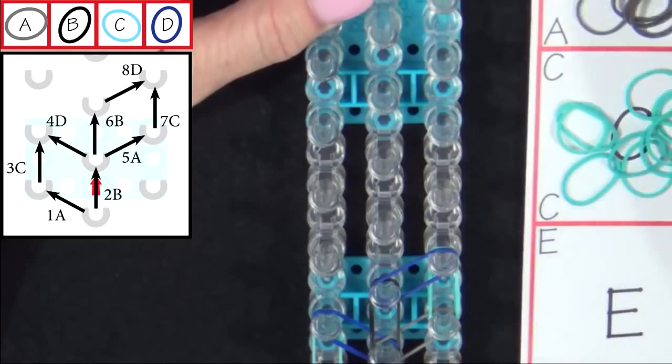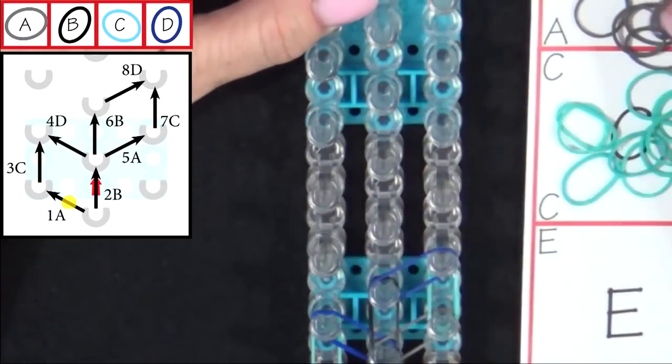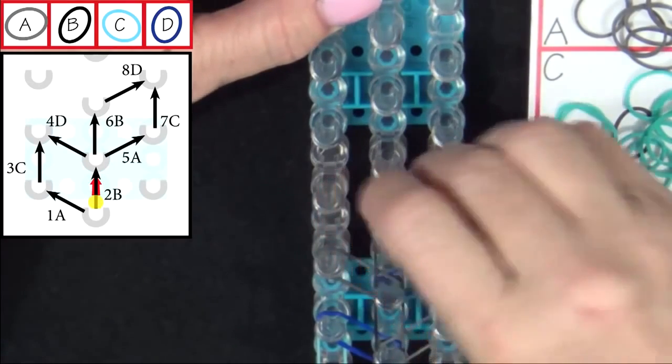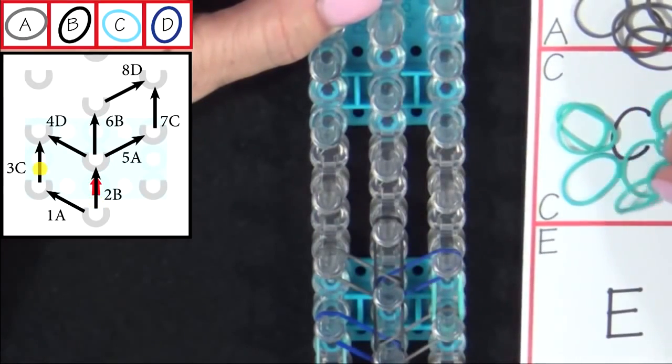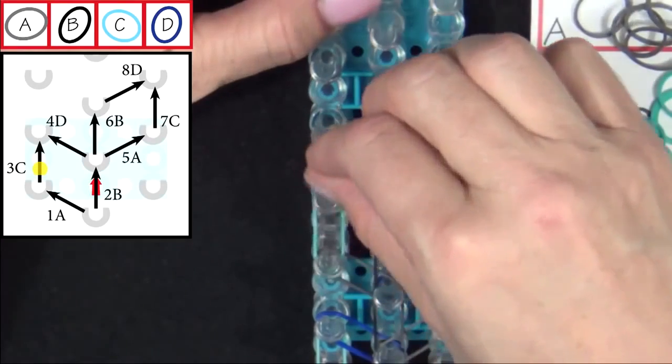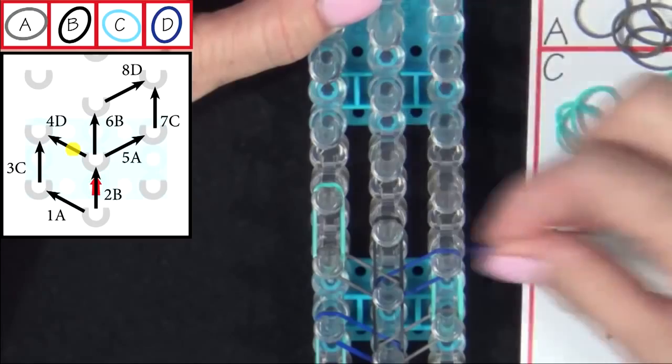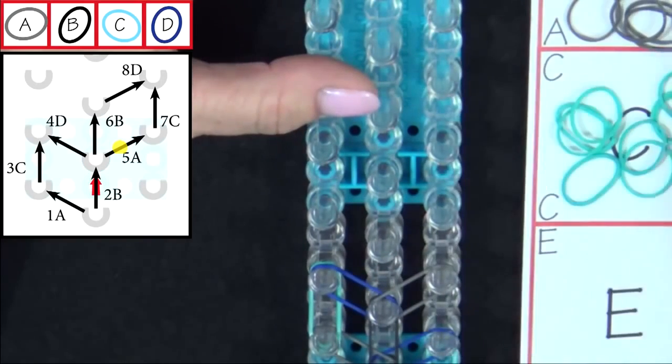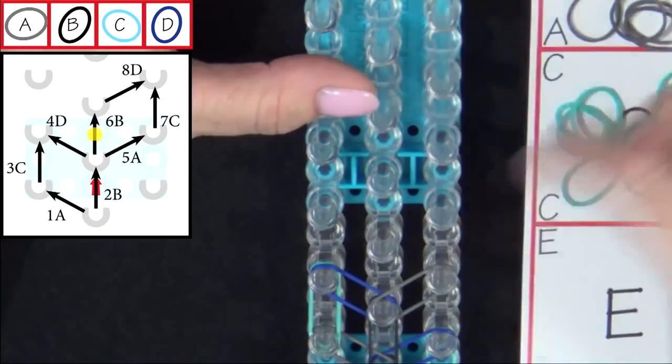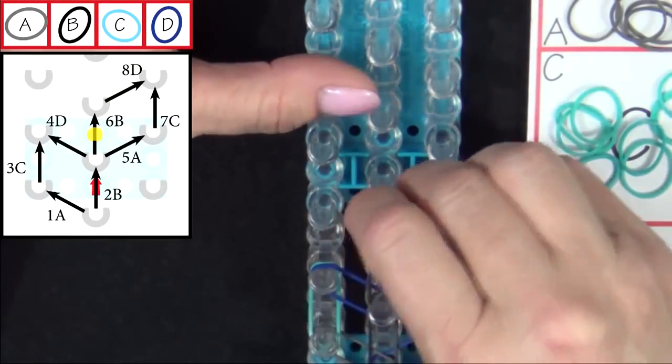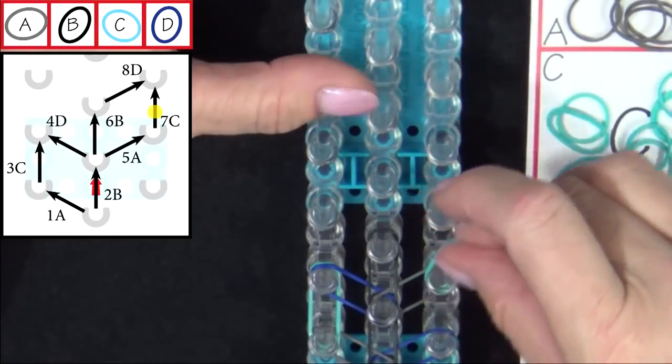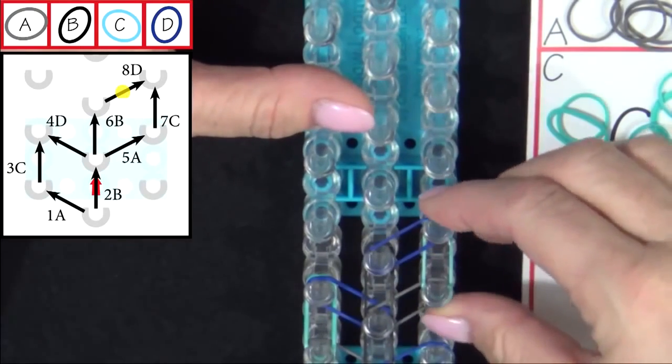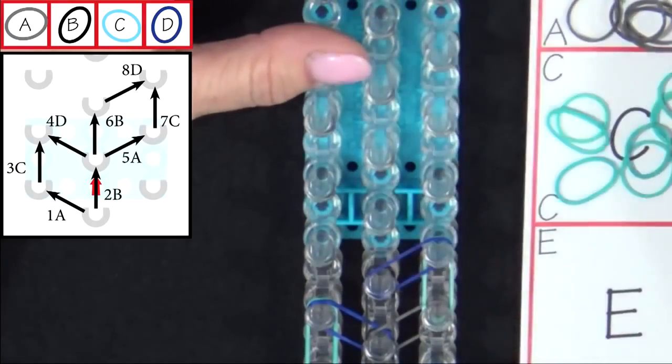We'll repeat the pattern one more time and then we'll fast forward to the end of the loom. 1A. 2B. 3C. 4D. 5A. 6B. 7C. And 8D. We'll fast forward from here and refer to the diagram on your screen until you reach the end of the loom.